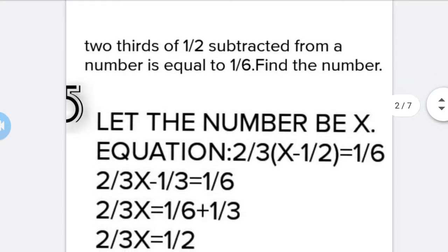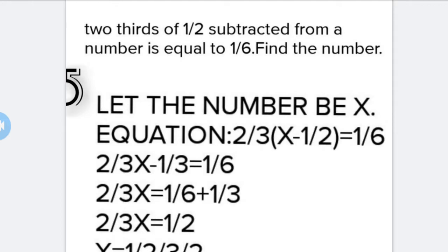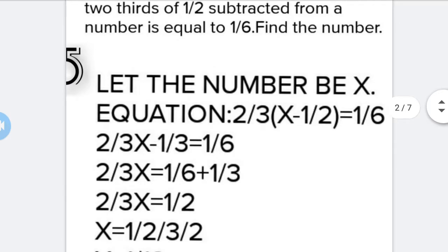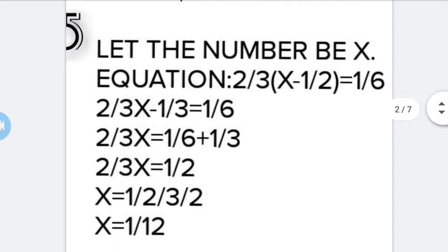Let the number be x. We'll make an equation: 2/3 times x minus 1/2 equals 1/6. When we solve that equation, it becomes 2/3x minus 1/3 equals 1/6. Again solving, 2/3x equals 1/6 plus 1/3, which is 1/2. So we will get x equals 3/4, and this is our answer.